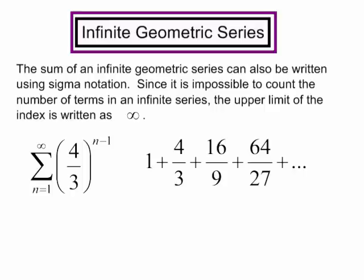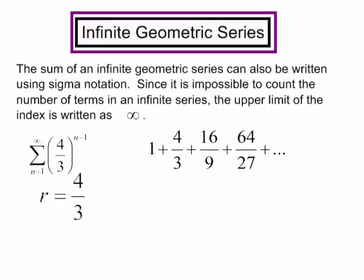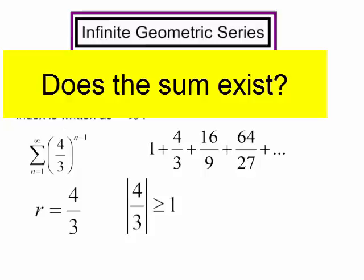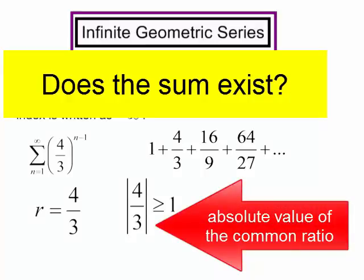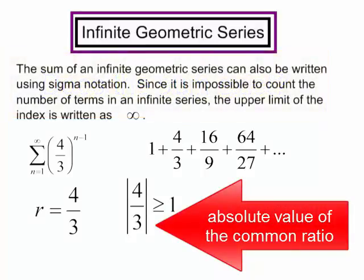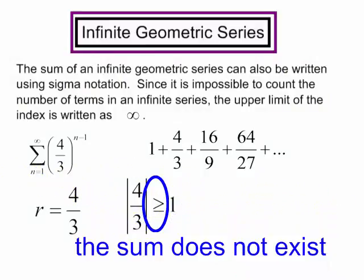My first term is 1. My common ratio is 4 thirds. Now let's check to see if the sum does exist. The absolute value of 4 thirds, it is not less than 1. It is greater than or equal to 1. Therefore, the sum does not exist.